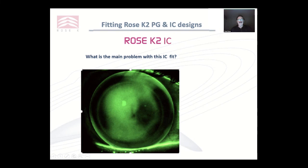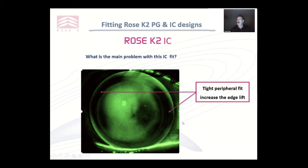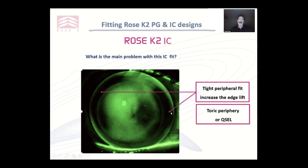What is the main problem with this IC fit? The main problem is these two tight areas here and here. So what we're going to have to do is increase that edge lift — but the edge lift here looks good. When you have symmetry like this, a toric periphery is your best option because you're not going to change the fit over that central cornea, only from here out to the edge of the lens, which will give a very good result. You can use quadrant-specific edge lifts as well, but with this symmetry I would go to toric periphery to resolve or improve that fit.